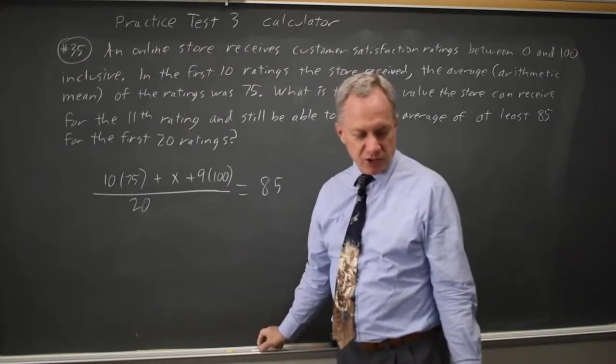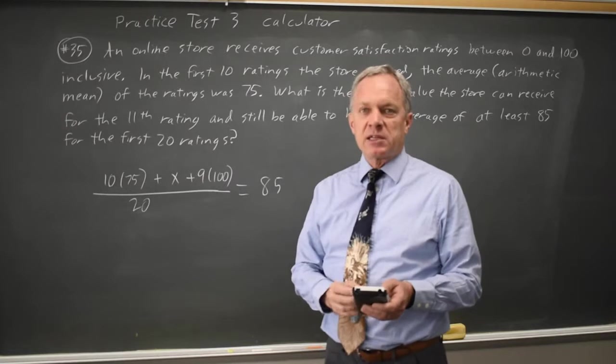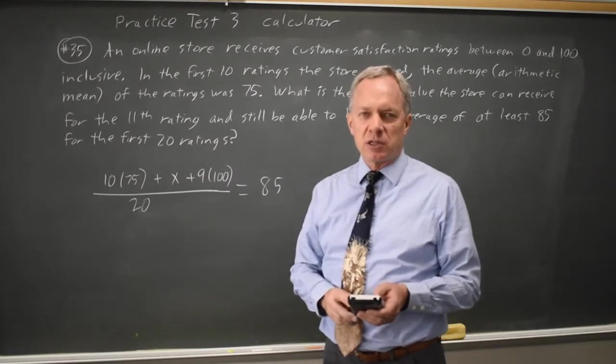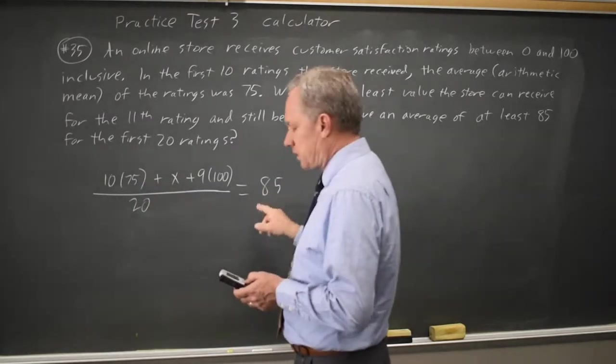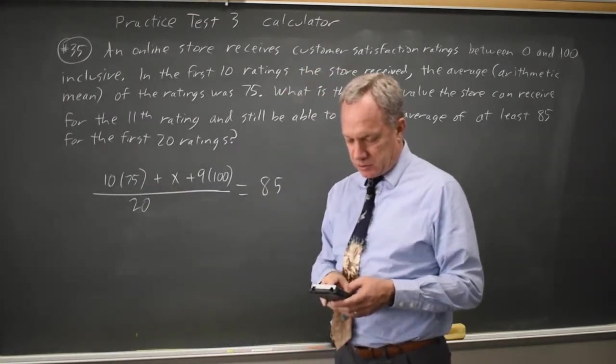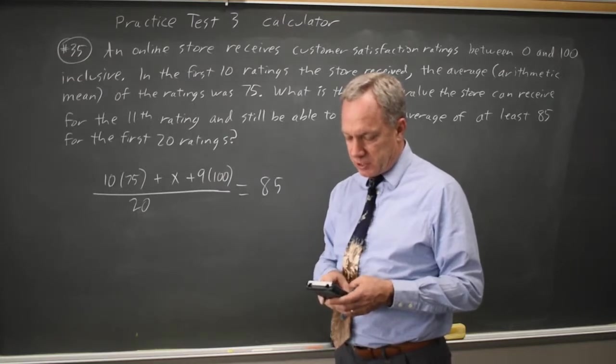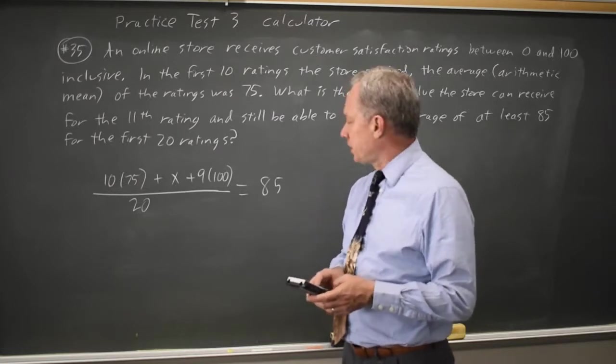So if we set that equal to 85, we'll find the value of X. If I go to my calculator, and as I often do for equations that only have one variable, I'll put the left side in Y1, the right side in Y2. So that's 10 times 75 plus X plus 9 times 100, all divided by 20 on Y1, and 85 for Y2.